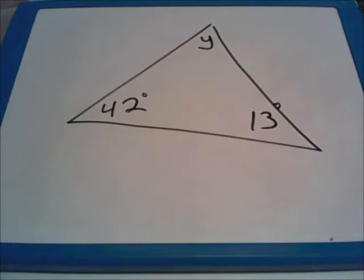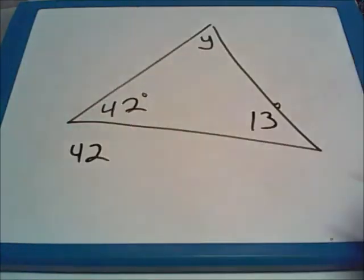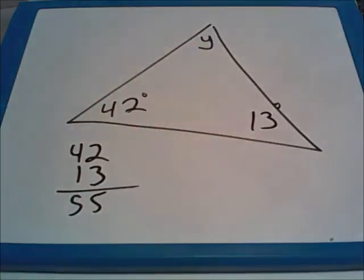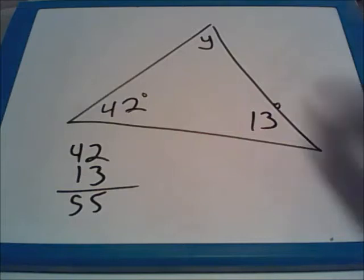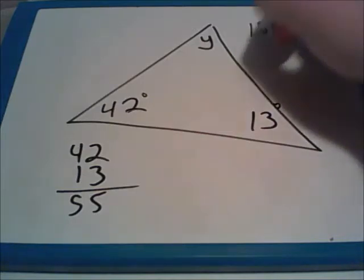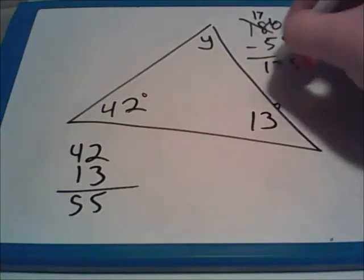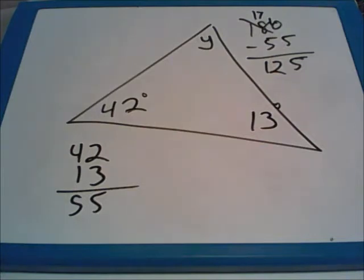The first step in solving this problem is seeing how many degrees are taken up by the two angles that we already know. The bottom left is worth 42 degrees and the bottom right is worth 13 degrees, so together they are worth 55 degrees. So we have to take 55 degrees away from the total of every triangle, 180, to see how much is left for the missing corner. Here I do a little borrowing and subtract and I come up with Y being worth 125 degrees. You can always double check yourself - take all three angles in this one, 125, 42, and 13, and add them all together and it should get you back to that total of 180 degrees.